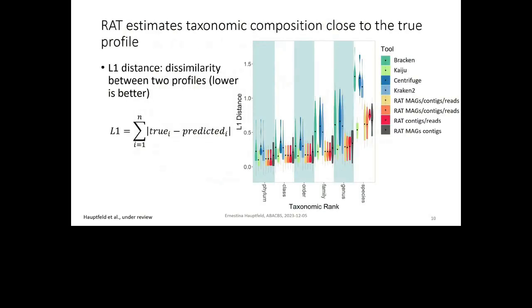Now, this was on a read-by-read basis. And now this graph is about comparing the taxonomic profiles that come out of these read annotations, that are based on these read annotations. And here, this is the L1 distance. And then L1 distance is a measure of dissimilarity between two profiles. In this case, the correct profile, because we know what's supposed to be in each sample. And then the reconstructed profiles. And so we want a low dissimilarity. And what you can see here is that RAT is amongst, the RAT profiles are amongst the shortest distances, but Kaiju does better in this case on genus and species rank.